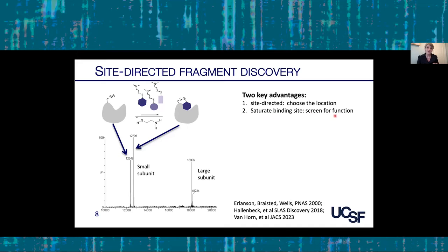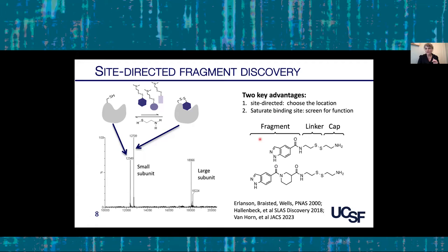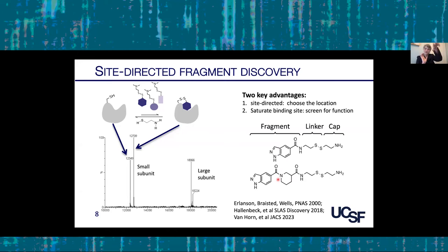The library has two points of diversity. One is the terminal fragment piece that will interact with the protein. To separate that diversity element from the disulfide, we have a series of linkers with different lengths, geometries, and chemistries — a very important part of the discovery process. Often the strongest structure-activity relationships from a screen come from the chemistry of this linker, because we have to put the fragment in the right place starting from a cysteine residue, so distance and geometry are critical.